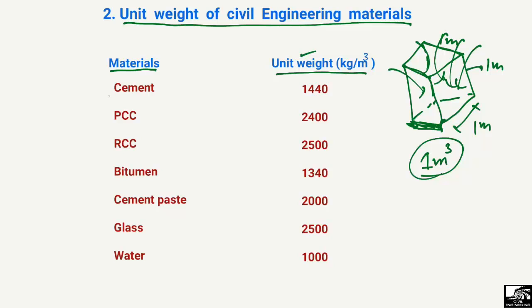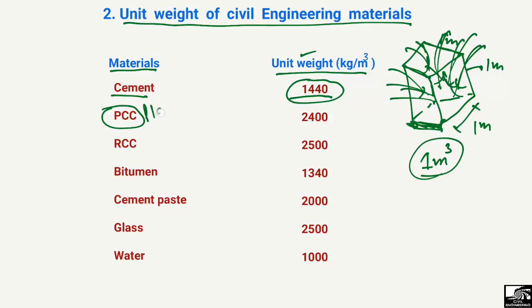For cement, the unit weight is 1440 kg/m³, meaning 1440 kilograms of cement can fill 1 cubic meter. For PCC — plain cement concrete — the value is 2400 kg/m³, meaning 2400 kilograms of plain cement concrete can fill 1 cubic meter of volume.